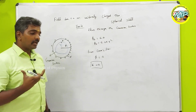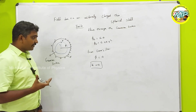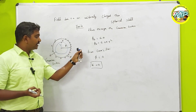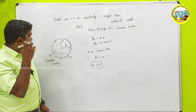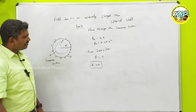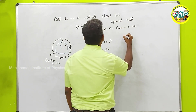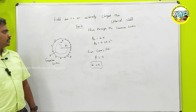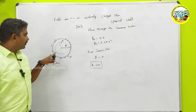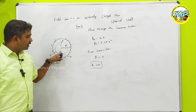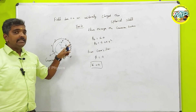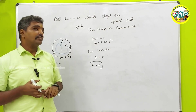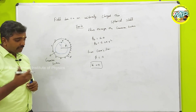This is a very important result. This effect is called electrostatic shielding. The electric field inside the spherical shell is zero because there is no charge enclosed by the Gaussian surface. Since the total flux is zero, the electric field is also zero.